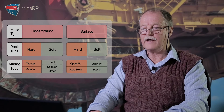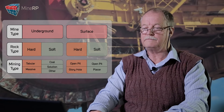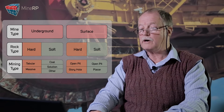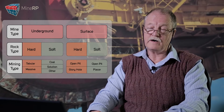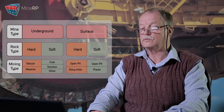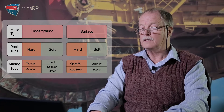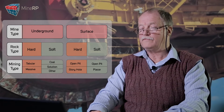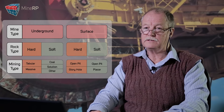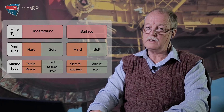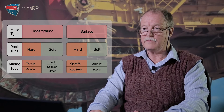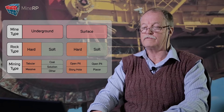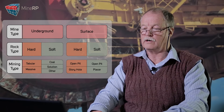Underground hard rock, flat tabular — like we have in the South African gold and uranium mines. Underground hard massive, which you would find typically for most other minerals around the world. For underground soft, we've separated out coal for two reasons: methane and coal dust. If you have a mining disaster, it's one or both of those things that have gone wrong.